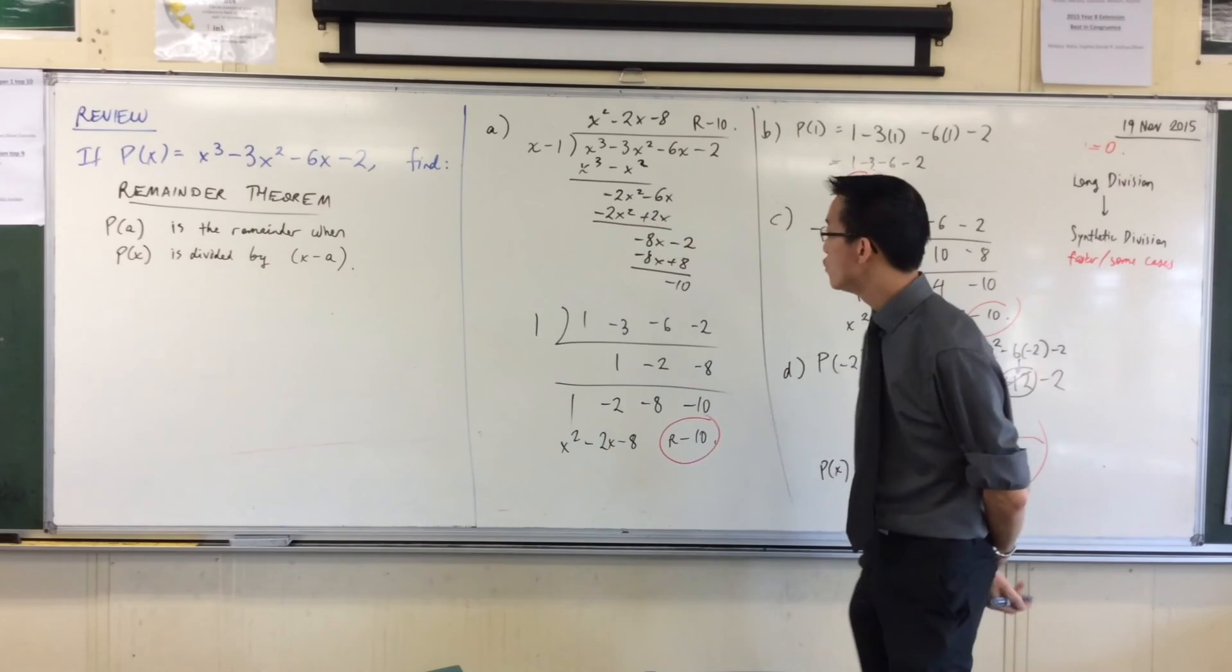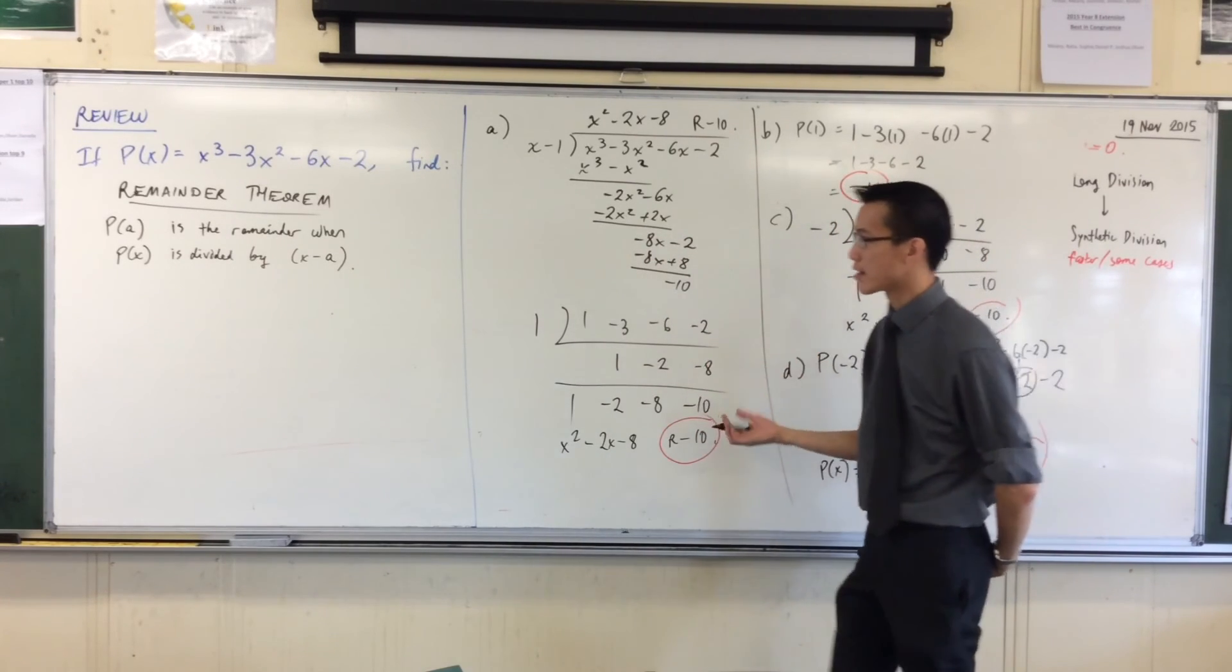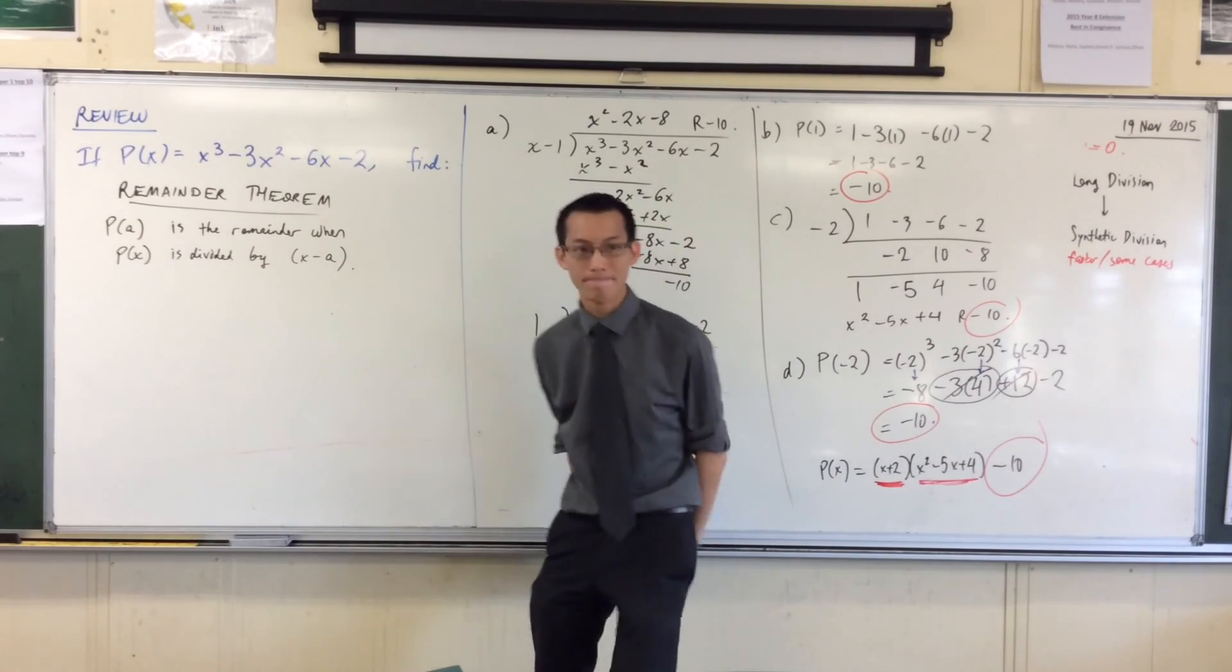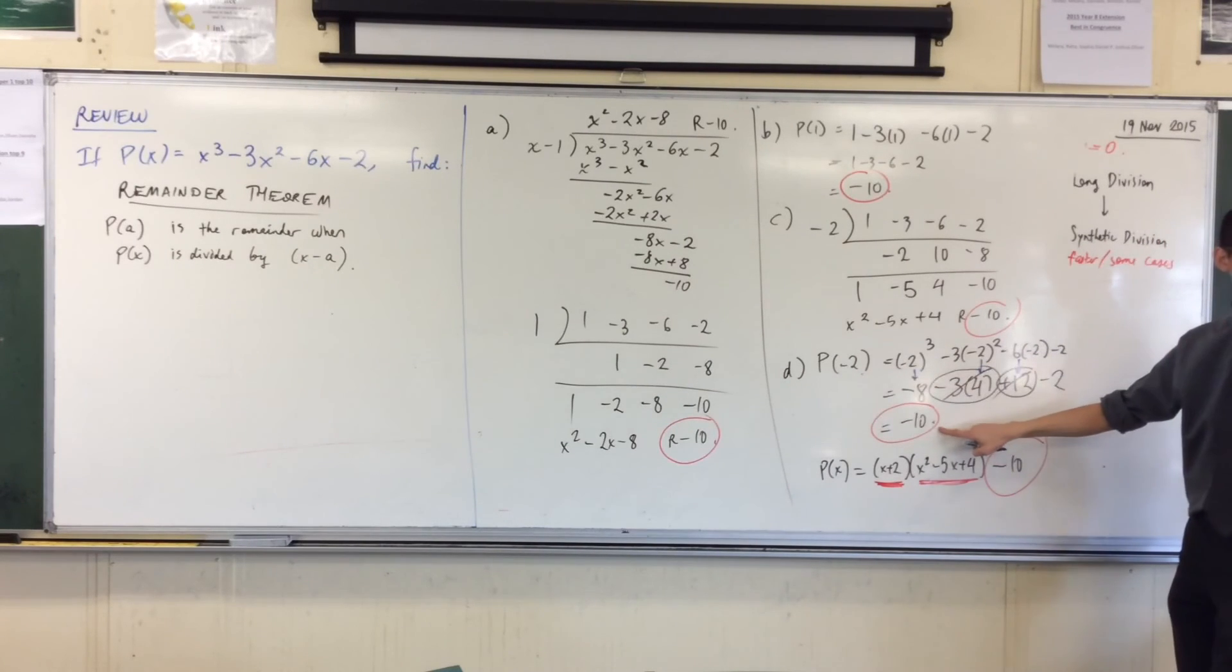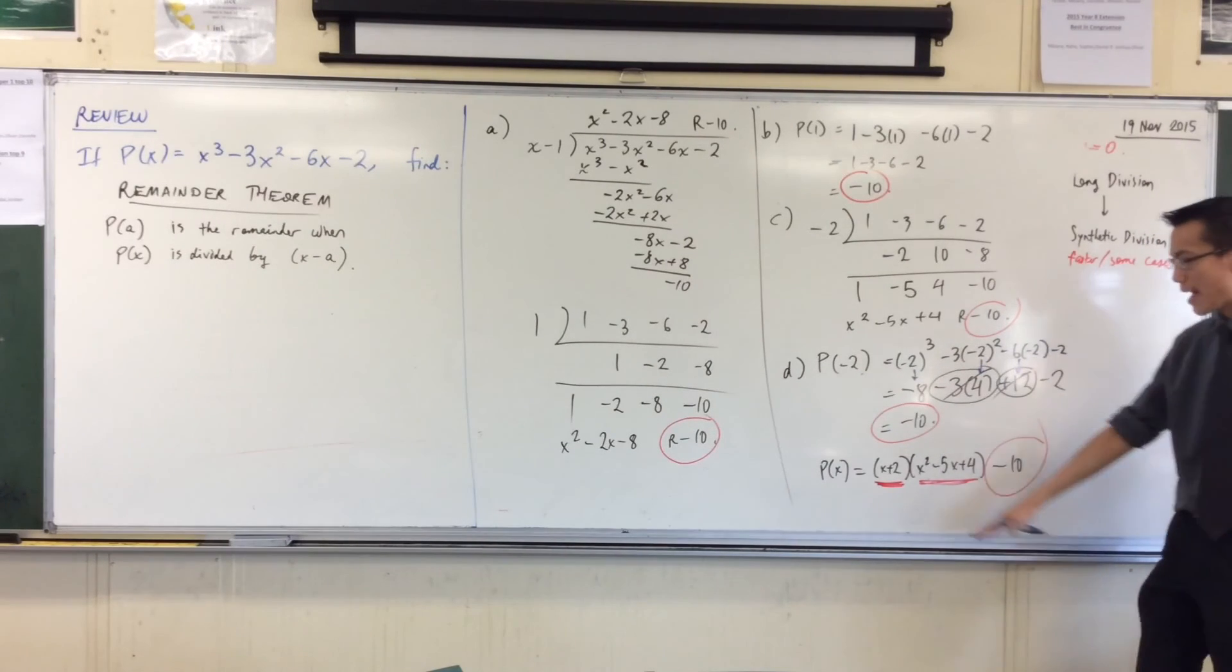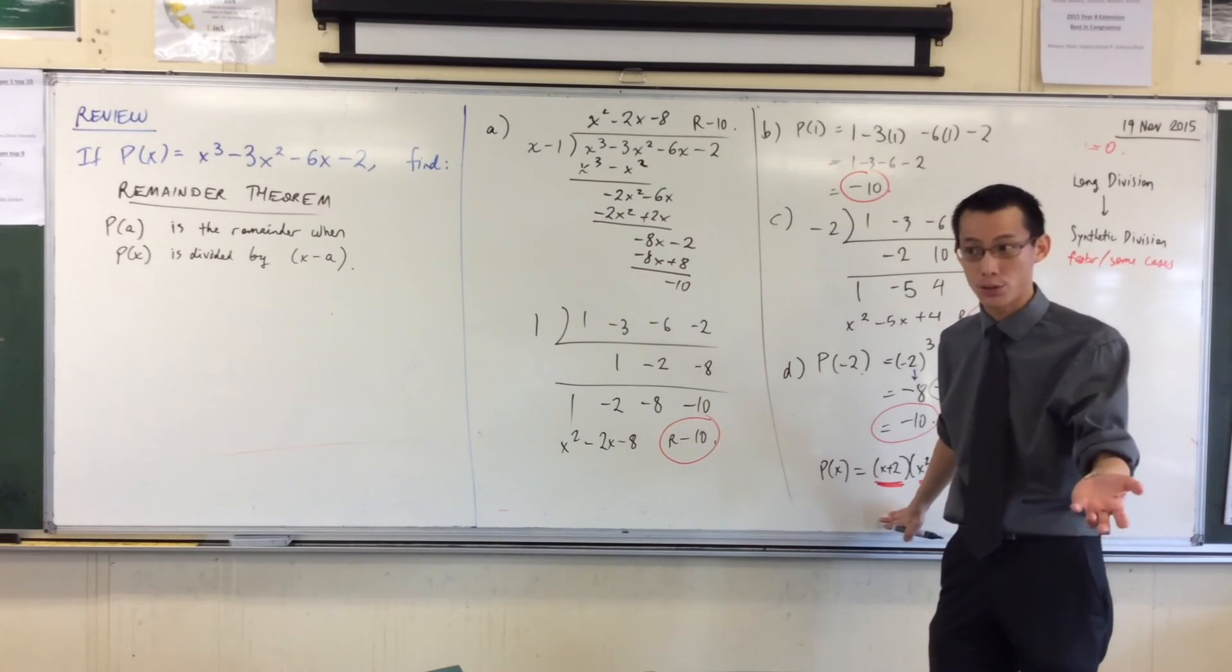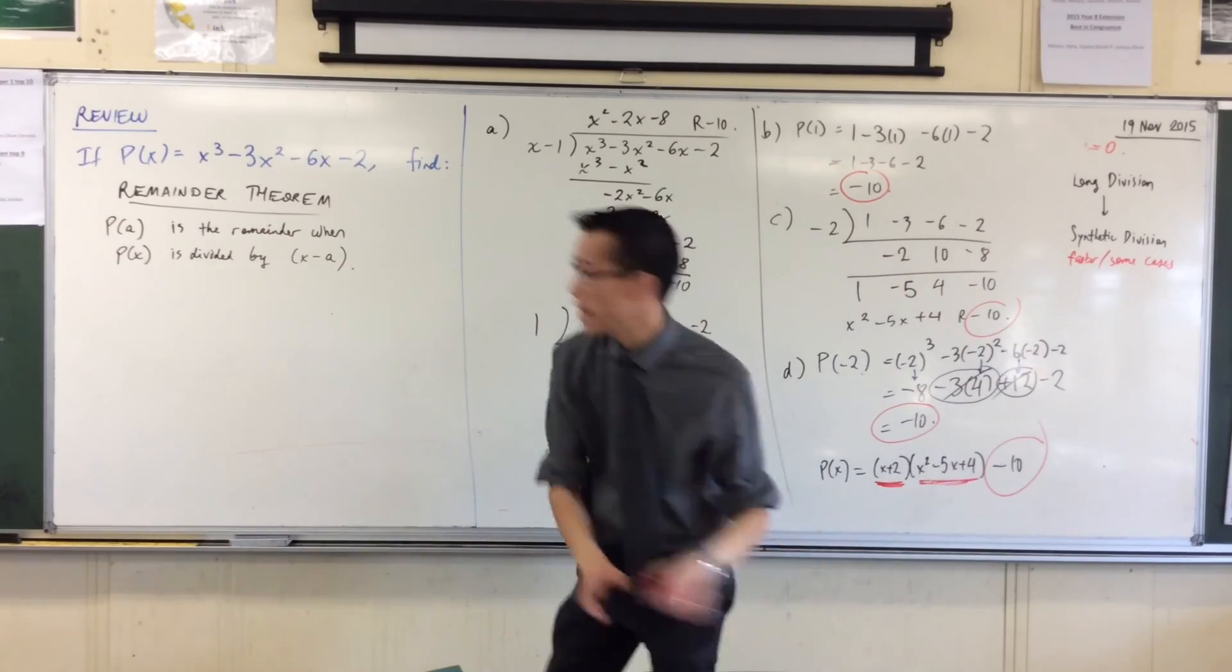So you can see here in this example, P(1) is the remainder when P(x) gets divided by x minus 1, or P(-2) is the remainder when you divide by x plus 2, because it's x take away negative 2. Do you see that? That's why you get x plus 2. So this here is the remainder theorem.